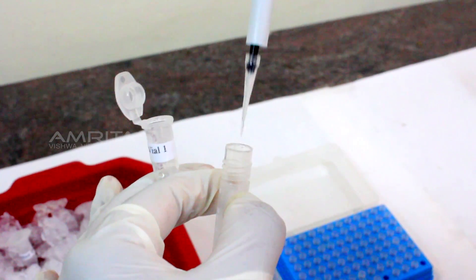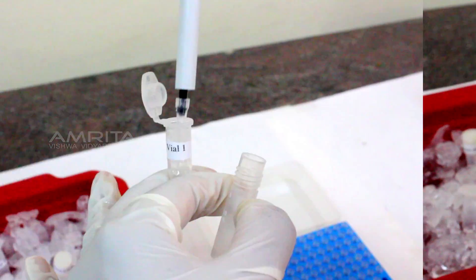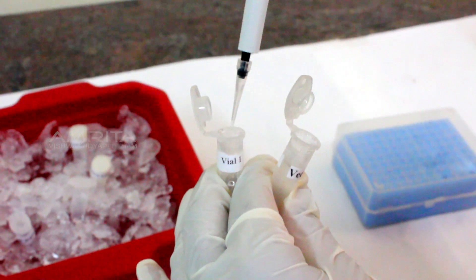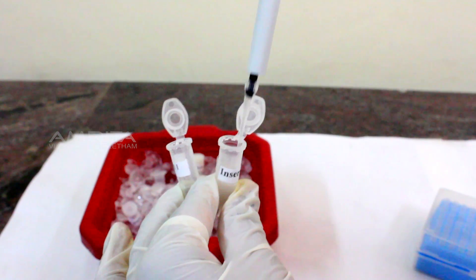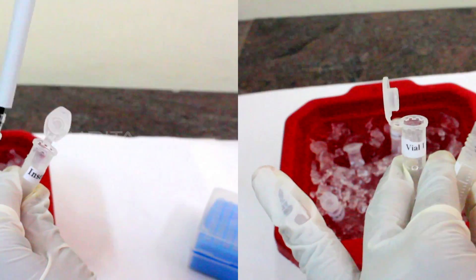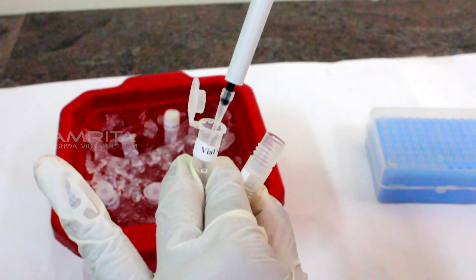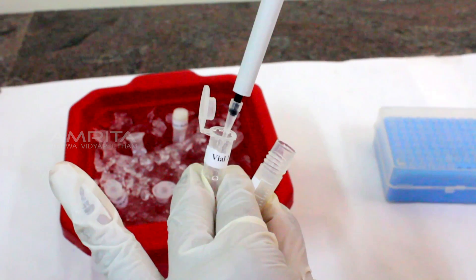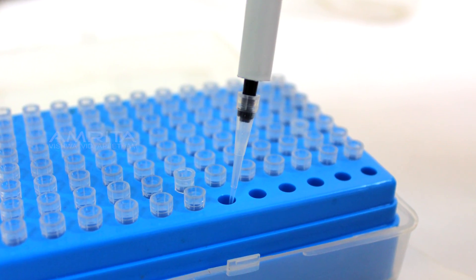Similarly, add 1 microlitre of T4 DNA ligase buffer, 1 microlitre of vector DNA, 2.5 microlitre of insert and 0.5 microlitre of T4 DNA ligase enzyme to the same vial. Make sure to use separate pipette tips for each.